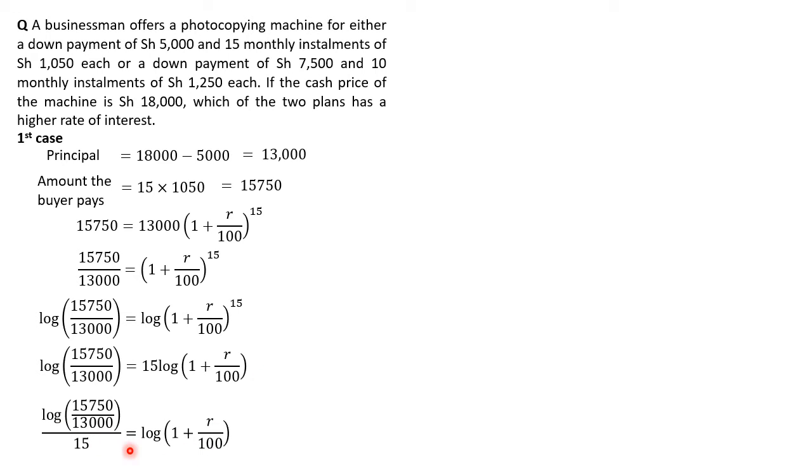Please understand that 15 is dividing the logarithm of the fraction 15,750 divided by $13,000. At this point, students should now introduce the calculator. Type 15,750, divide that by $13,000, you get an answer on your screen. Then find the logarithm of the answer, you get another long decimal. Divide that by 15 and you get this figure here.